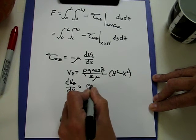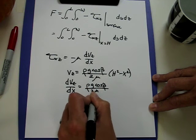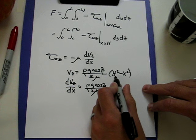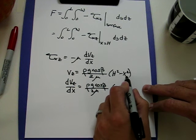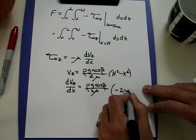We can now take the derivative dvz dx and we get all the stuff in front times the derivative of this with respect to x. The h term gives us nothing. The x term gives us minus 2x.